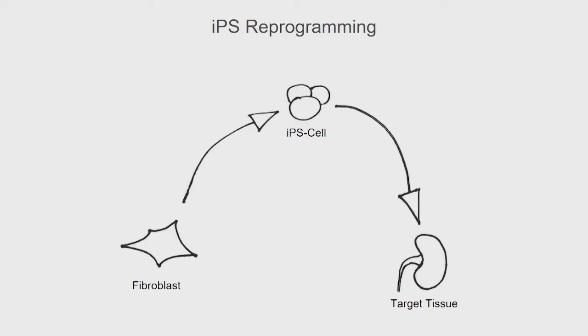I'd like to talk about the kidney and how to regenerate kidney tissue. A lot of people are thinking about this currently, and most use this approach of using a fibroblast, turning it into an induced pluripotent cell, then regenerating kidney tissue from there. This is quite difficult, and we try to take a shortcut.